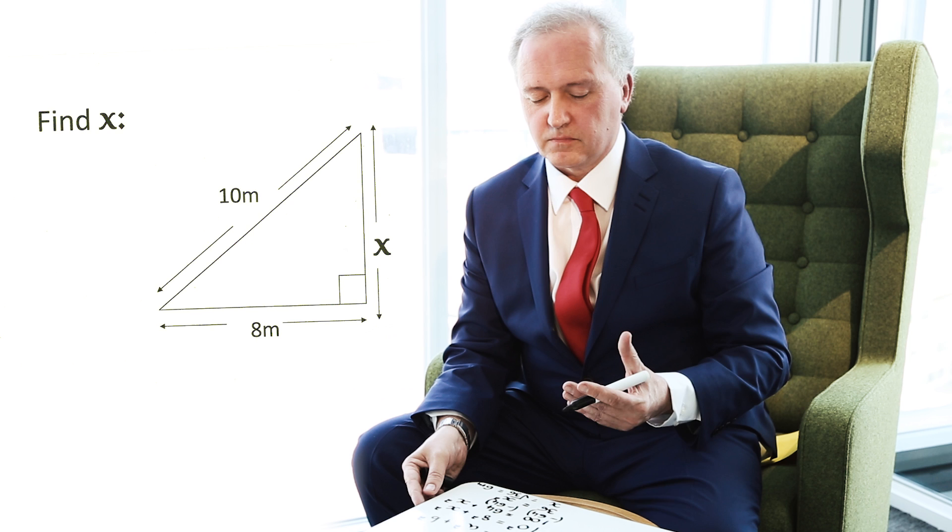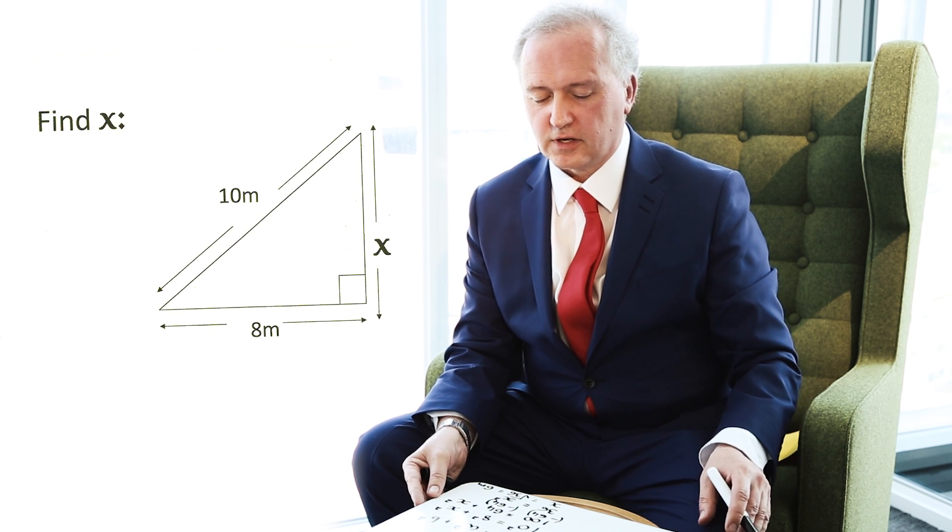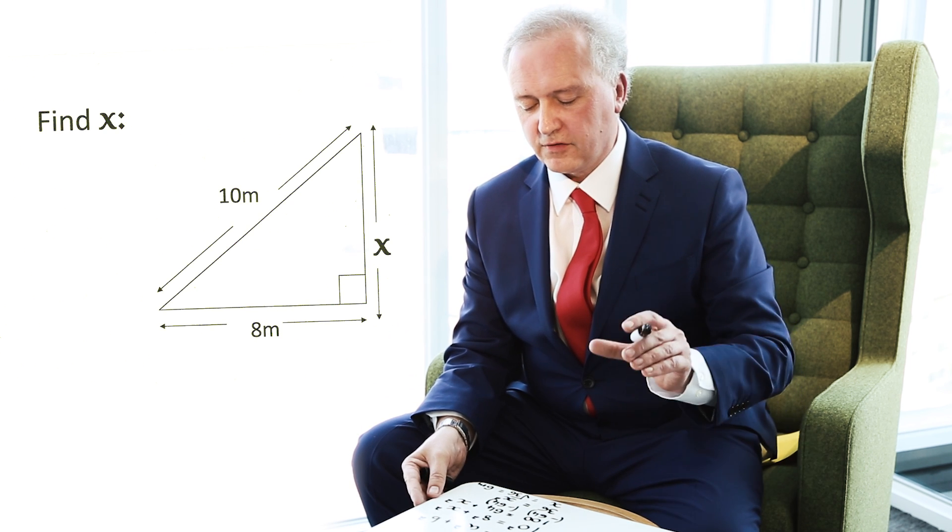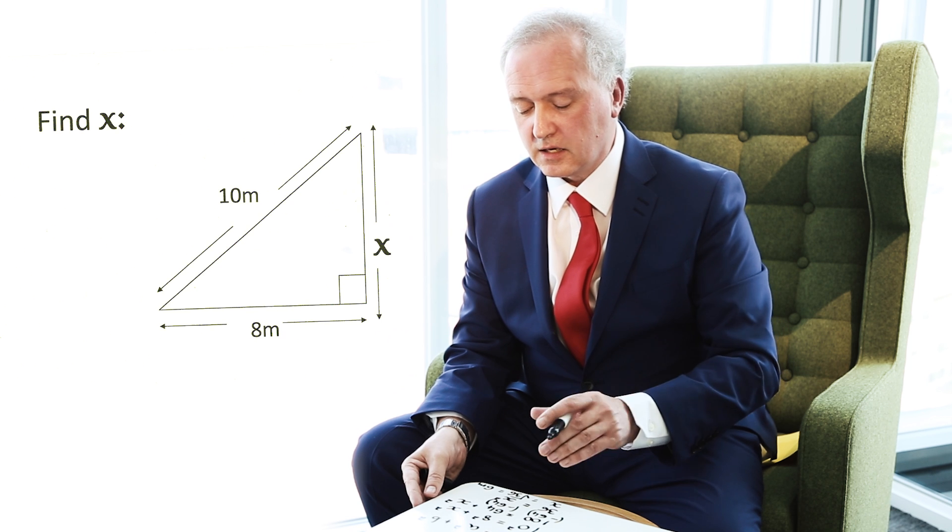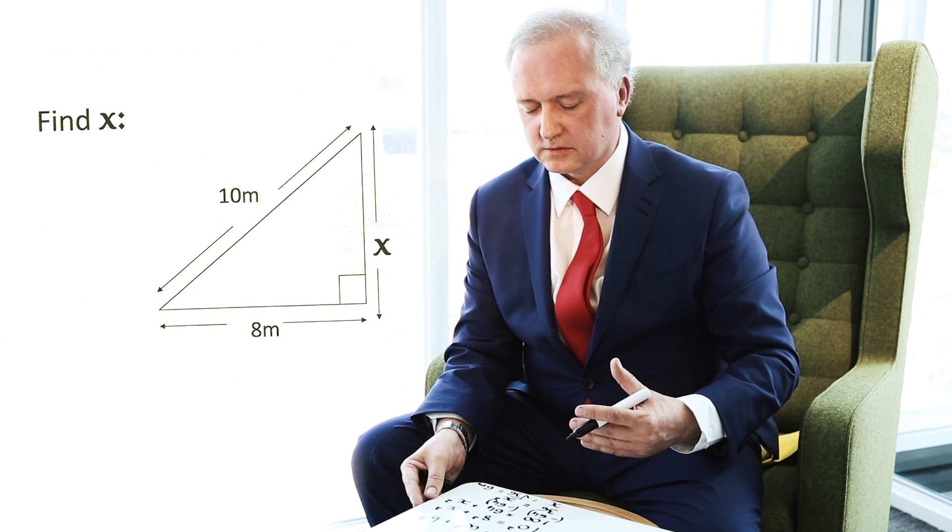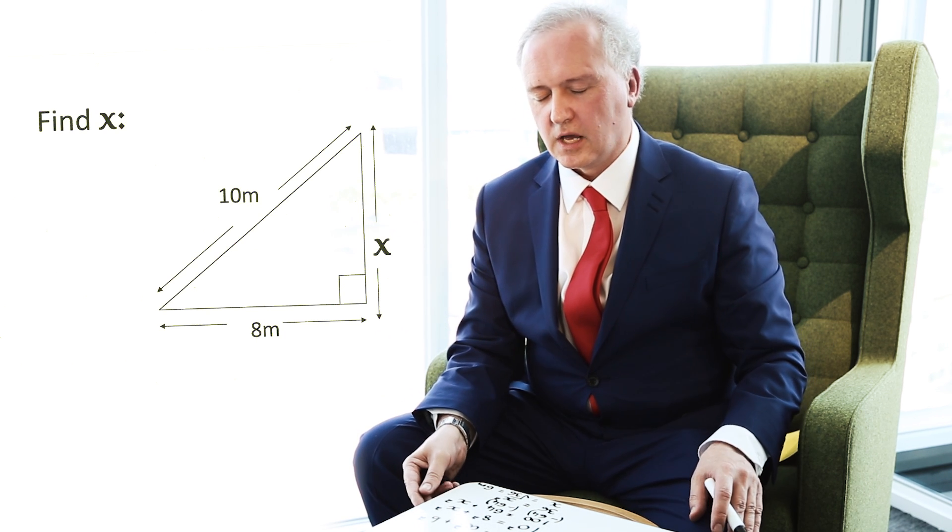So Pythagoras' theorem, easily identified as being a right-angled triangle where two sides are given. We've got to find the length of the third side. If I be very clear about formula, substitute, work out, check, and show nice, sequential, clear, concise method work, I'm going to get the full marks.